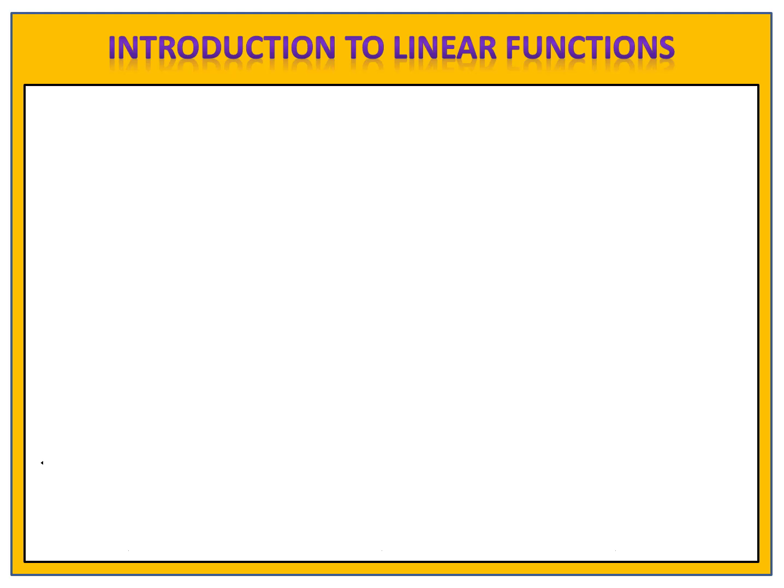Notice the first four letters in the word linear, L-I-N-E. That spells the word line. And simply put, a linear function is a function whose graph is a line.